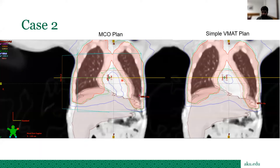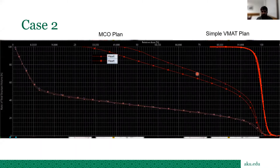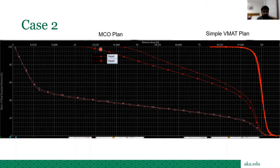This is an MCO plan — you can see the blue line showing the low cold-dose region is pulled down here, whereas I couldn't achieve such a difference with a simple VMAT plan. The DVH difference shows around 15 to 20 percent difference in heart dose. Although the mean dose difference is not much, you can see the difference in the low-dose region, while the coverage remains the same for both plans.